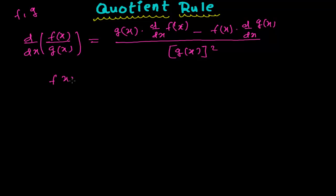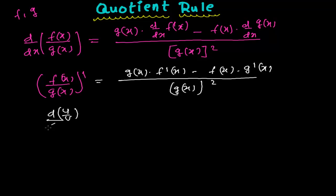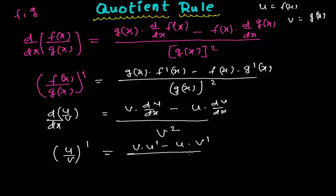In another way you can write this as: F(x)/G(x) whole prime — where prime indicates the derivative of the whole part — equals the second function times the derivative of the first function, minus the first function times the derivative of the second function, whole divided by the square of the second function. Or if you want to understand it in U and V form: d/dx of U/V, where U represents F(x) and V represents G(x), equals V times derivative of U, minus U times derivative of V, whole divided by V squared. Or simply: (U/V)' = (V·U' − U·V') / V².